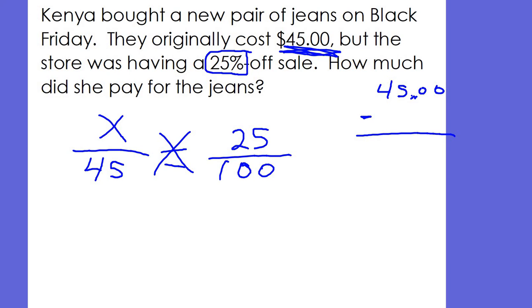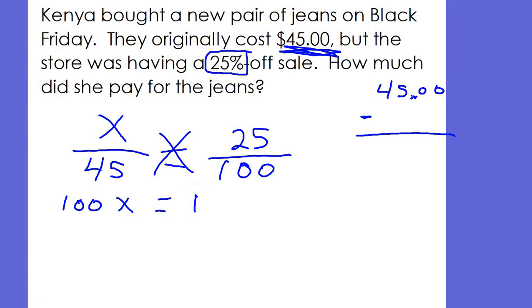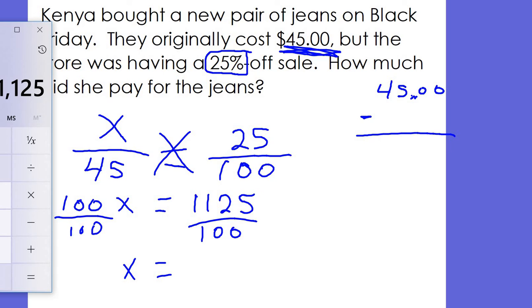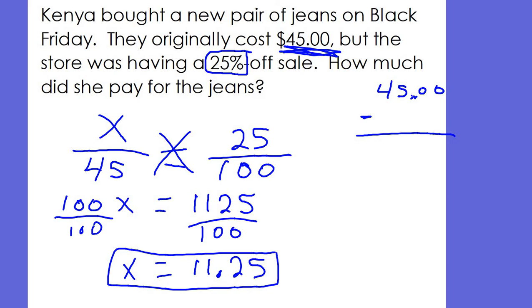First we're going to cross multiply. We've got 100x equals, then we're going to multiply 45 times 25, and that gives you 1,125. Then, to get that x alone, we have to divide by 100 on each side. So we get $11.25. This is your discount, or how much you're getting off of those jeans because they're on sale.